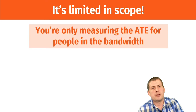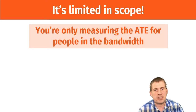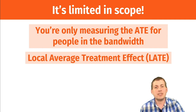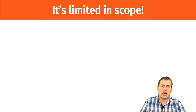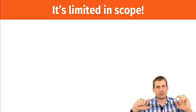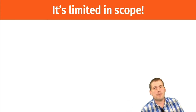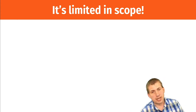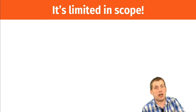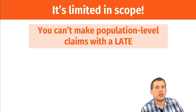Regression discontinuity is also limited in scope. You're only measuring the average treatment effect for people in the bandwidth, which gives you something called the local average treatment effect instead of the total average treatment effect. This matters especially for economists, because what you generally care about most in causal inference is the population-level average treatment effect — the effect of a program on everybody on average. Randomized control trials let you do that, but with RD you're just looking at people in the bandwidth.